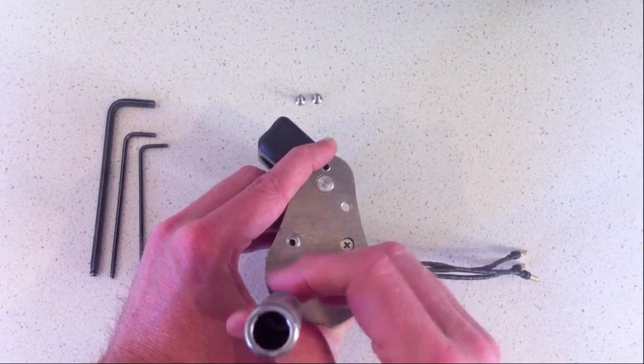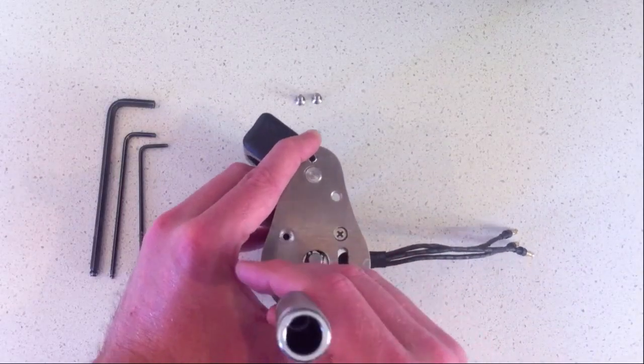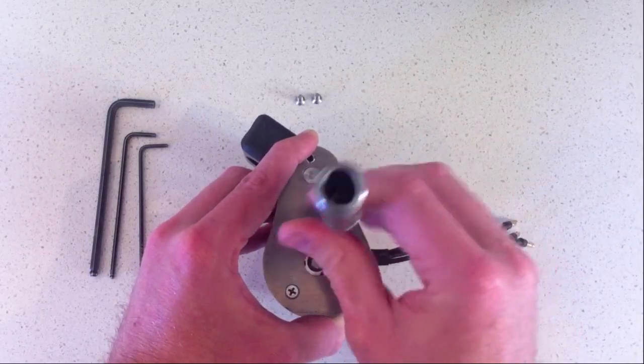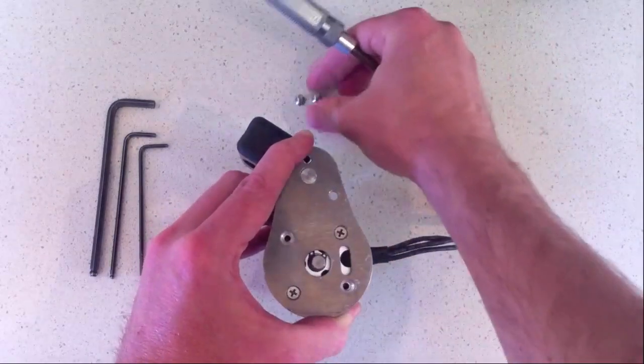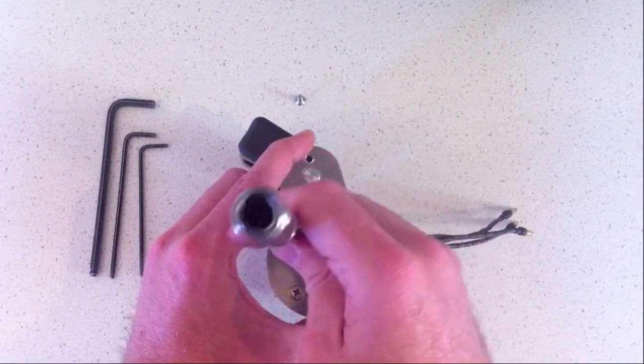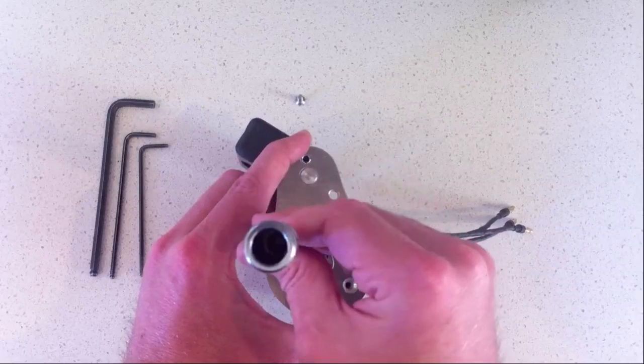Now, if this is a permanent installation, I recommend actually using some Loctite on the screw threads to make sure that they don't come undone. Otherwise, just make sure they're nice and snug and check them every so often.